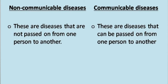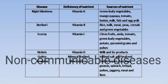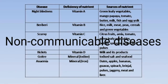Diseases are classified into two main kinds: communicable diseases and non-communicable diseases. Non-communicable diseases are diseases that are not passed on from one person to another. Communicable diseases, on the other hand, are diseases that can be passed on from one person to another.